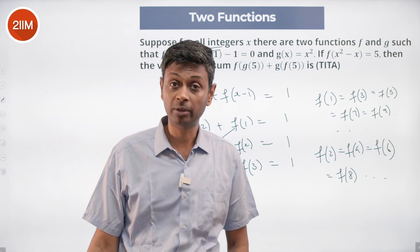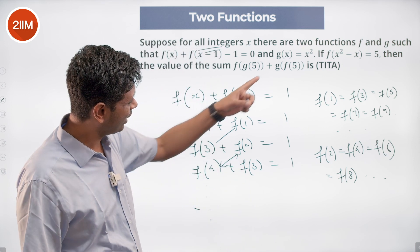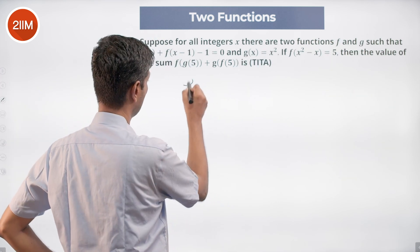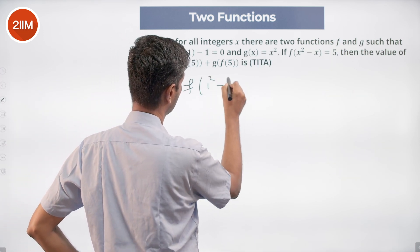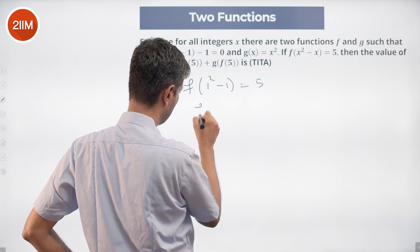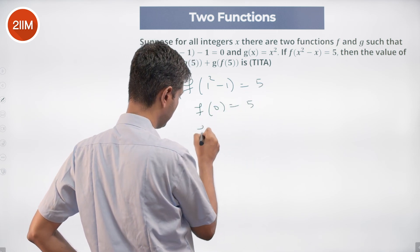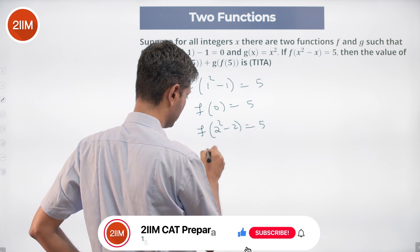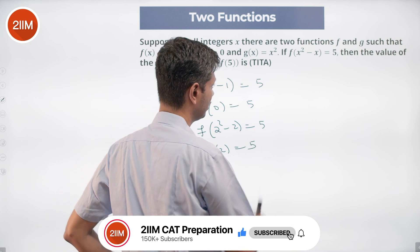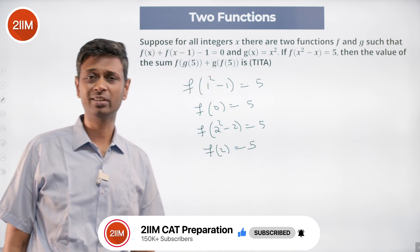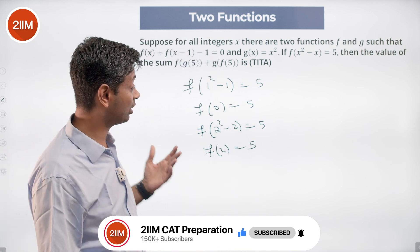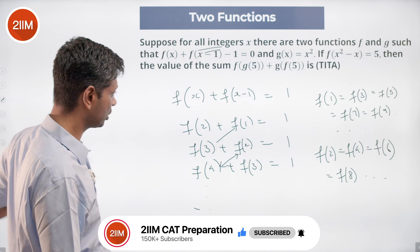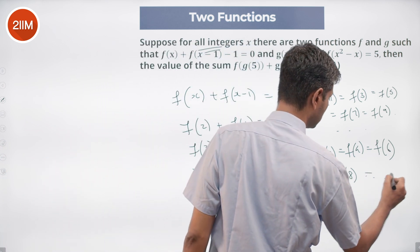We have f(x² - x) = 5. Putting x = 1: f(0) = 5. Putting x = 2: f(2) = 5. Putting x = 3: f(6) = 5. So f of all even numbers equals 5 — one part of the equation is solved.